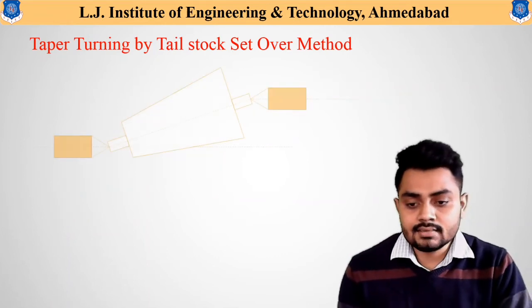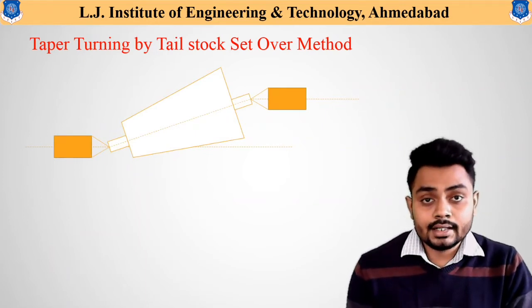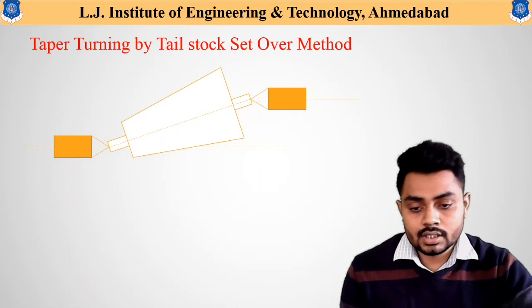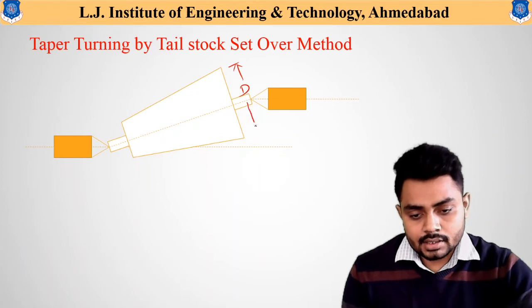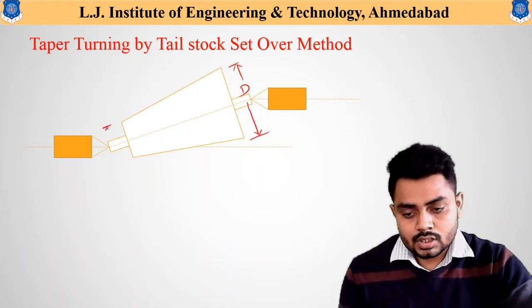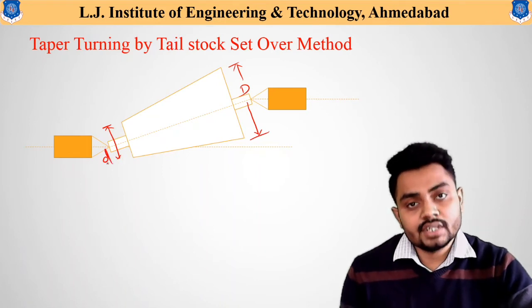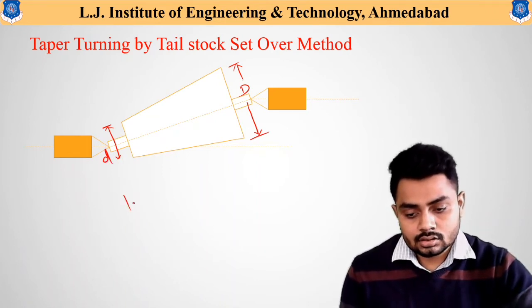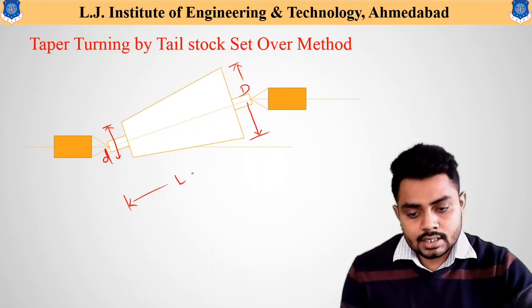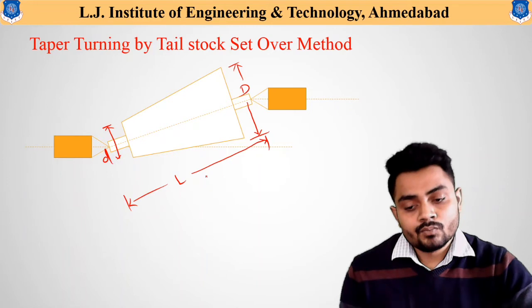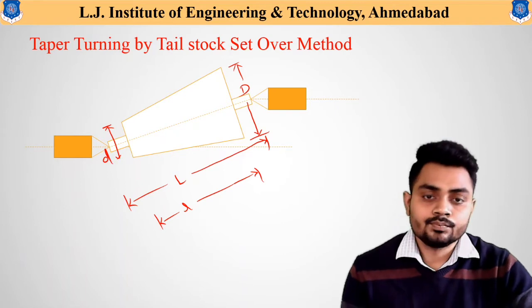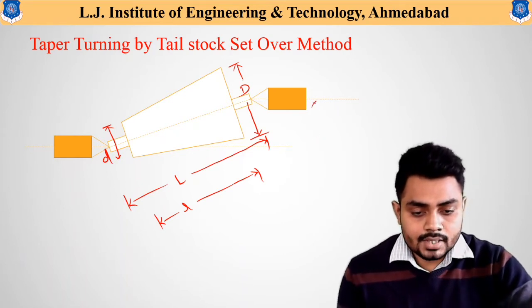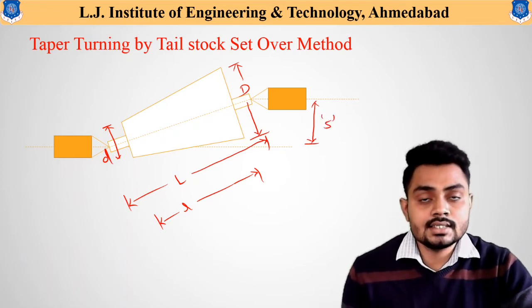Let us look at the figure and note the important terms. Capital D indicates the larger diameter of the tapered component, small d indicates the smaller diameter, and the entire length of the component is indicated as capital L, whereas the tapered length of the component is indicated as small l. The tailstock is shifted from its original location by a distance S, which indicates the set-over distance.